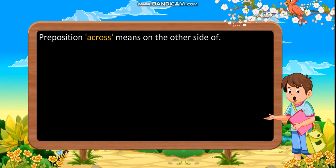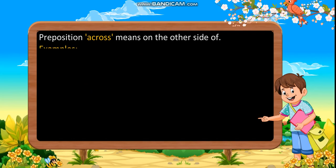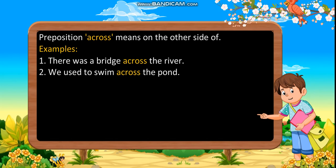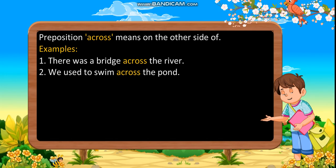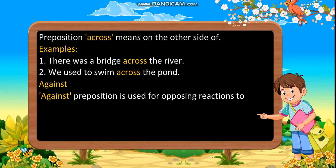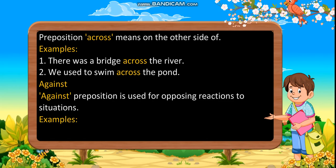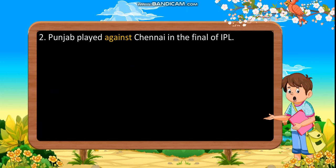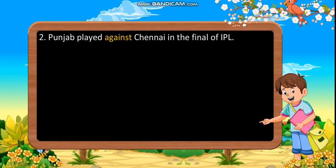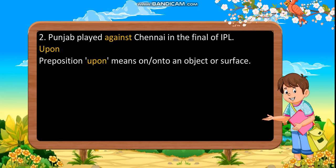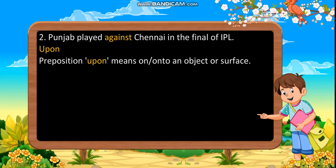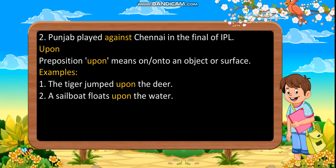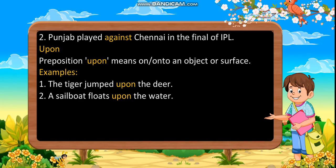Across: preposition across means on the other side of. Examples: first, there was a bridge across the river. Second, we use to swim across the pond. Against: against preposition is used for opposing reactions to situations. Examples: do not lean against the wall. Second, Punjab played against Chennai in the final of IPL. Upon: preposition upon means on or onto an object or surface. Examples: first, the tiger jumped upon the deer. Second, a sailboat floats upon the water.